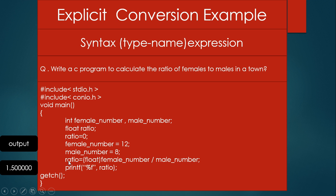Without the explicit cast, integer division would give a result like 1.000000 because integer values always produce an integer result. Since we need to convert the int data type to float, I use explicit conversion by writing (float) within the bracket. When we print the ratio with the explicit cast, the output will be 1.500000.